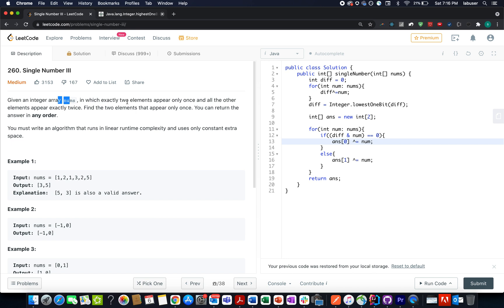Also, it is given that there are only two such elements that appear only once. The rest of the elements will appear two times in the complete input array. We need to write this algorithm in linear time complexity and we should use only constant space.